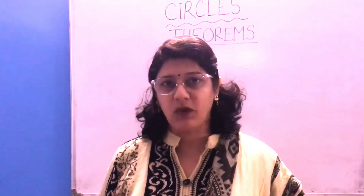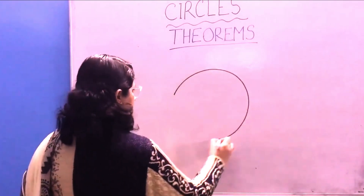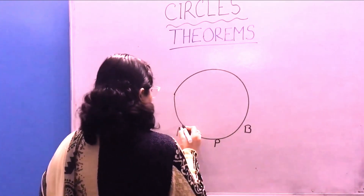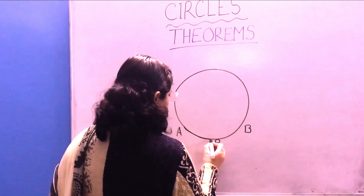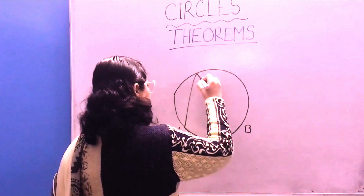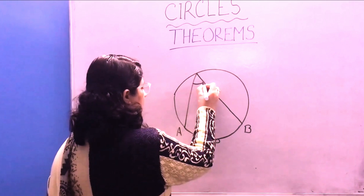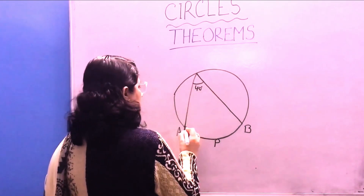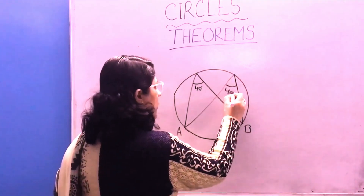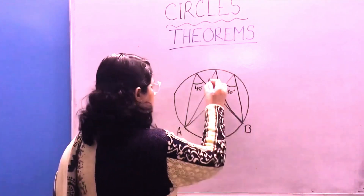The next theorem is: angles in the same segment of a circle are equal. The arc AB defines a segment. Any angle subtended by arc AB on the circumference in that same segment — suppose it makes an angle of 40 degrees — then anywhere else on the same part of the circumference, it again makes an angle of 40 degrees.